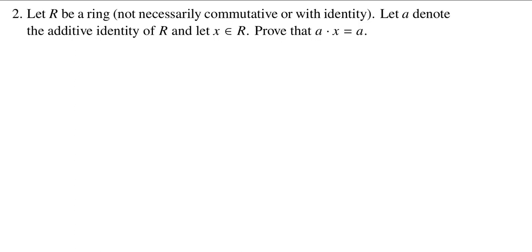We also have some generic element X in R, and we want to show that if I multiply the additive identity A by this generic element X we will get back the additive identity A. There's sort of a two-step process typically that you would do for this, but I'll show you just the one-line proof.